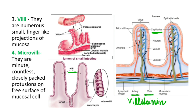The last structures are the microvilli. Microvilli are minute, countless, closely packed protrusions on the free surface of the mucosal cell. Here you can see an enlarged image of a mucosal cell comprising microvilli present on the free surface of each individual cell. Collectively they are called the brush border.